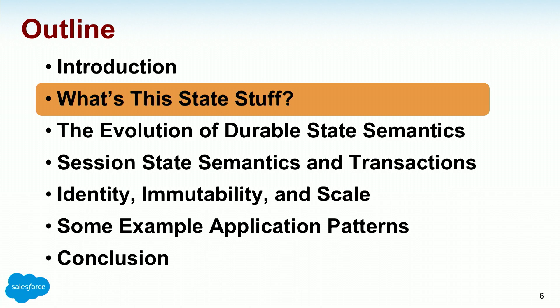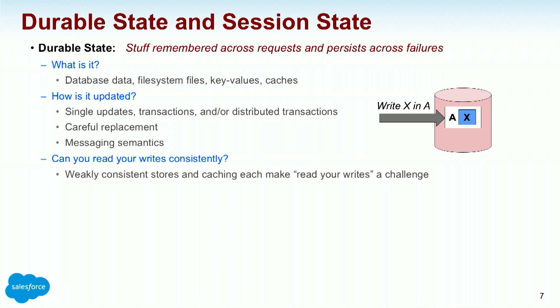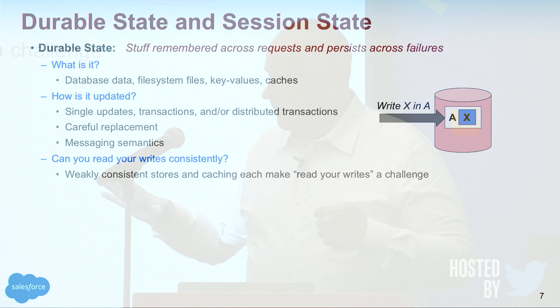What is this state stuff? When I hear durable state, I think: the stuff is remembered across requests and survives when things break. There's a whole question of how durable is durable — subject to computer failure, data center failure, thermonuclear exchange. But basically: does it survive a system crash or single node failure. Databases, file systems, key-value stores, and caches are all that way. How is it updated — single update, transaction, distributed transaction? Do I need careful replacement, and if so, what's the granularity? Do I need messaging semantics to update the various parts?